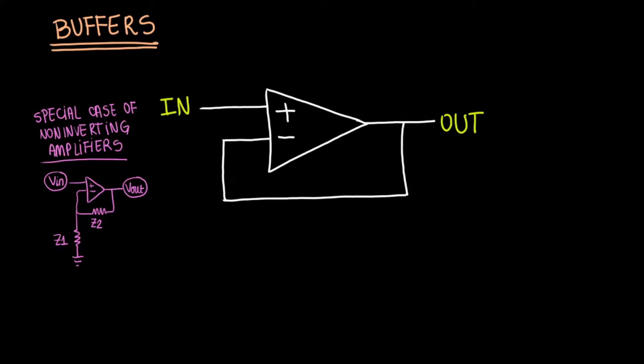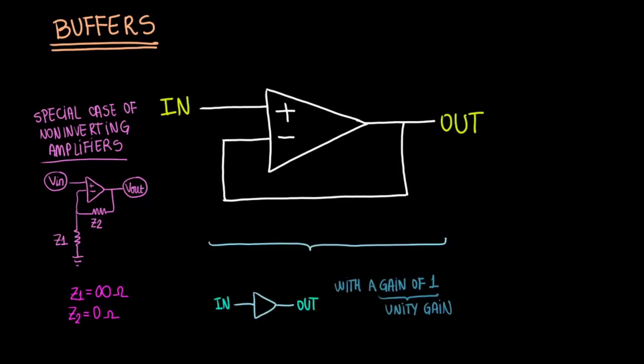Buffers are used to amplify weak signals. In this case, Z1 has infinite impedance and Z2 has 0 impedance. Therefore, the output is equal to the input with a gain of 1. This gain of 1 is referred to as unity gain.